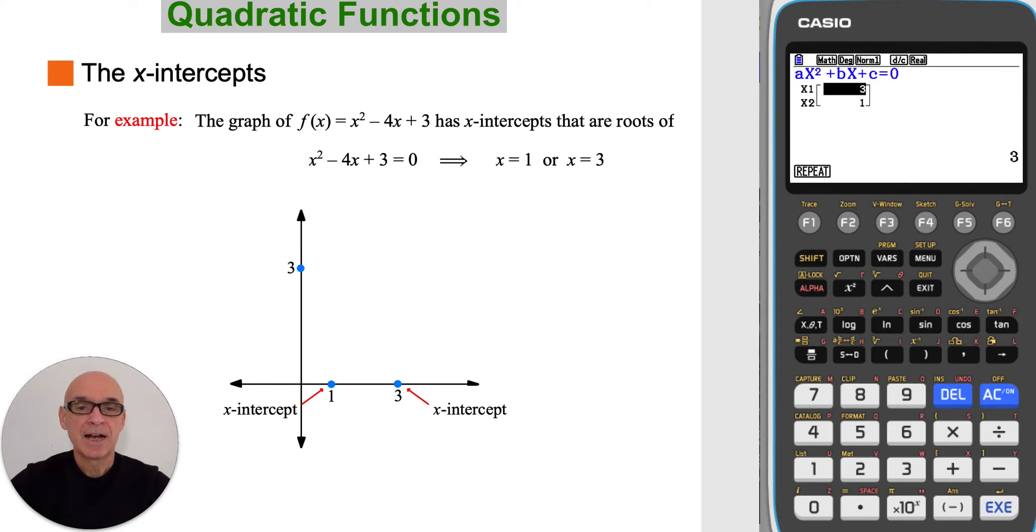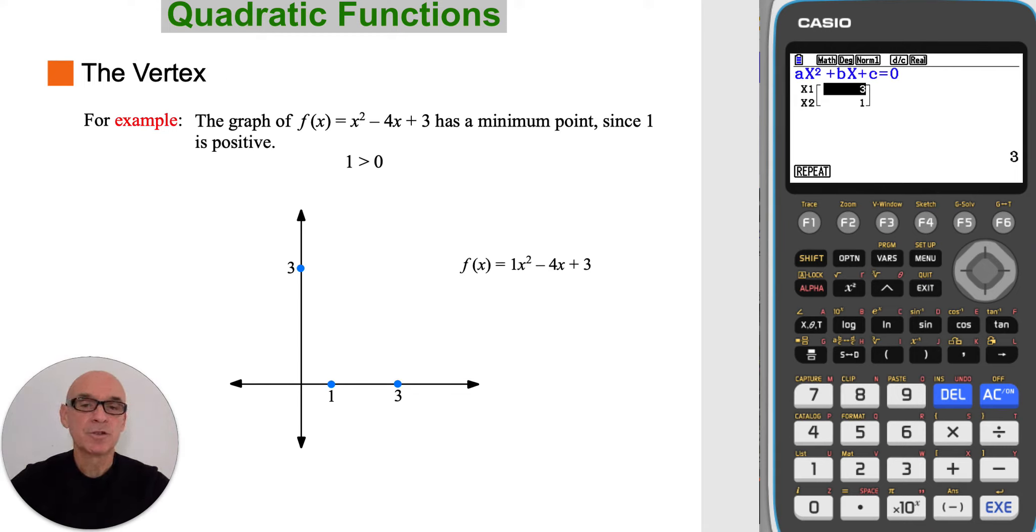So the function has x-intercepts of 1 and 3. The function will have a minimum point. This is because the value of a, the coefficient of x squared, is positive. It's equal to 1, which is greater than 0.